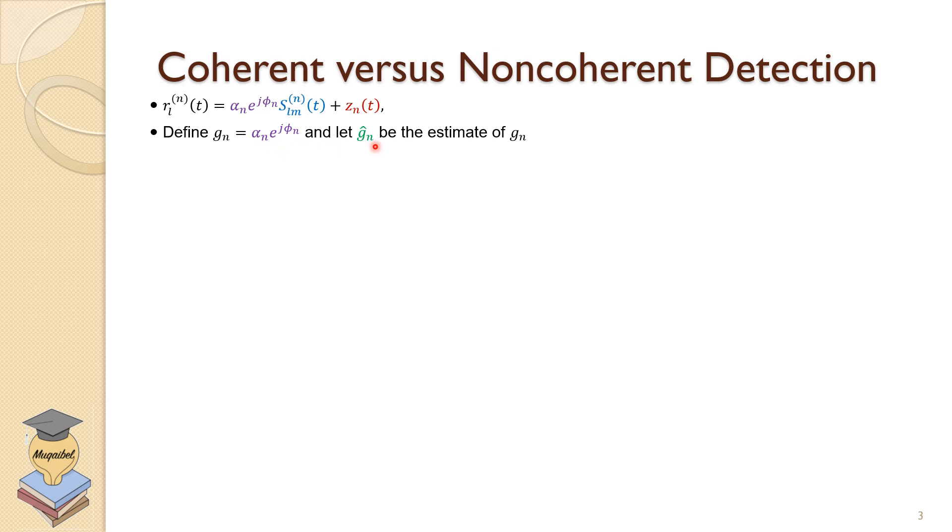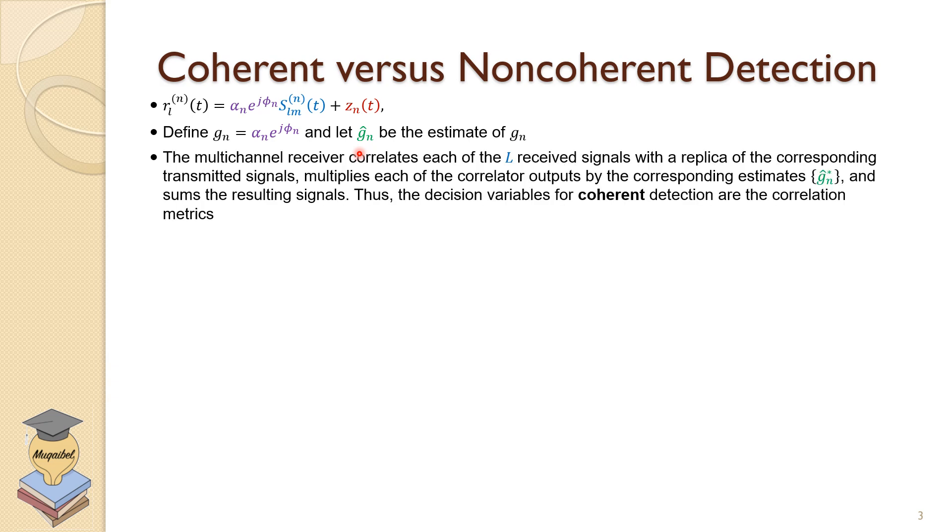Which is an estimation of the channel information. What did the channel do? And of course, that is our way to estimate GN. We don't have exact GN, but we have an estimated version. The multi-channel receiver will correlate each of the L receiver signals with the replica of the corresponding transmitted signal, like we do usually. We have a matched filter.